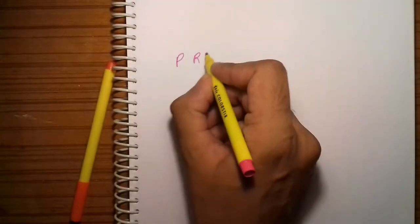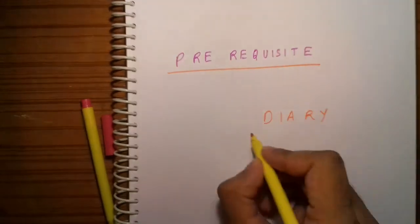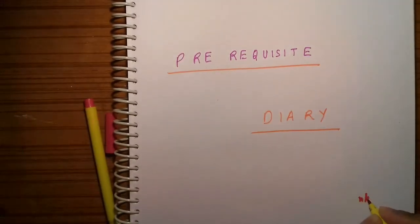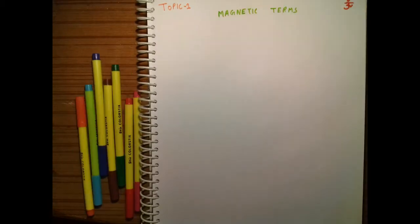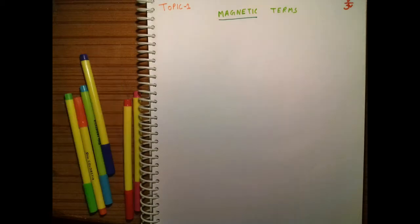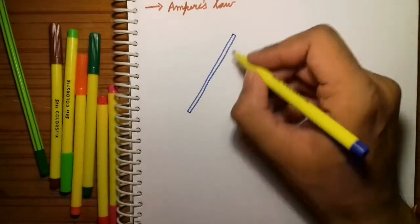This diary will contain all the topics that you must know before advancing to the main subjects, so please listen and see carefully. Today we will discuss the various magnetic terms like B (magnetic flux density), H (magnetic field intensity), and many more, and especially the BH curve. Let's start with the first topic: Ampere's law.